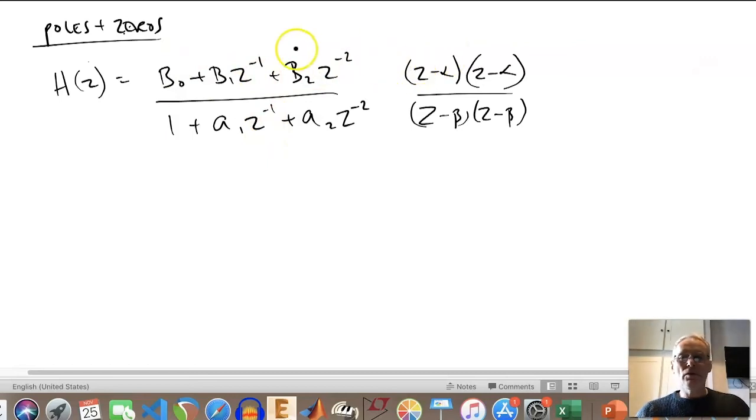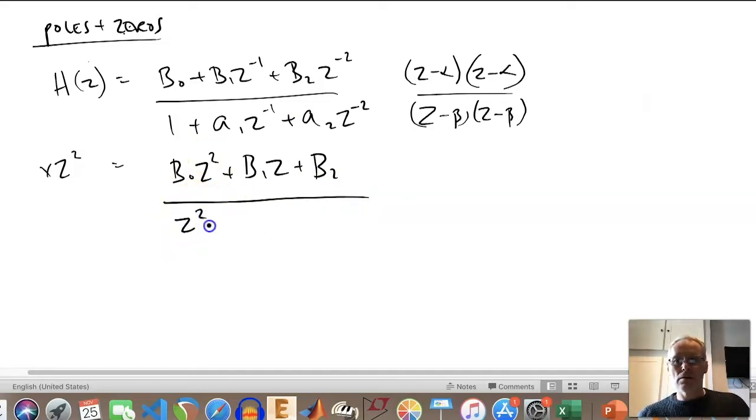Now often, if you want to get into this format, then if we were to multiply the top by z², this would obviously get rid of this z⁻², it would make this z, and it would make this term the z² term. So if I wanted to find the roots of this particular equation, let's first of all multiply through by z². If we do H(z) times z², this is then going to be B₀z² + B₁z + B₂.